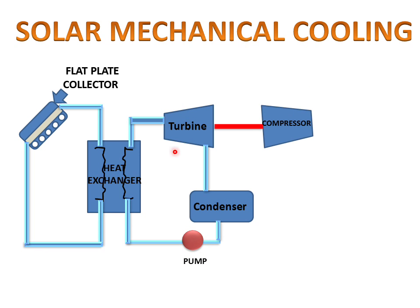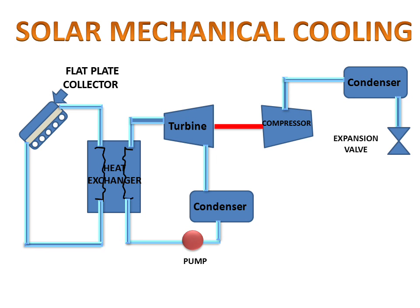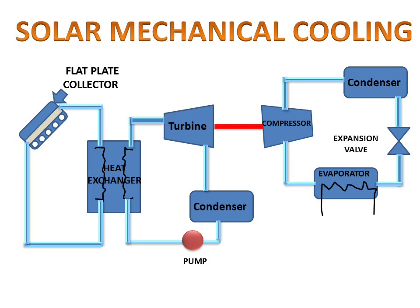This turbine is connected to the compressor with the help of a shaft. This compressor is connected to the condenser. This condenser is connected to the expansion valve, and this expansion valve is connected to the evaporator. The evaporator is then further connected to the compressor. The evaporator space, which we want to cool, is connected to the evaporator.